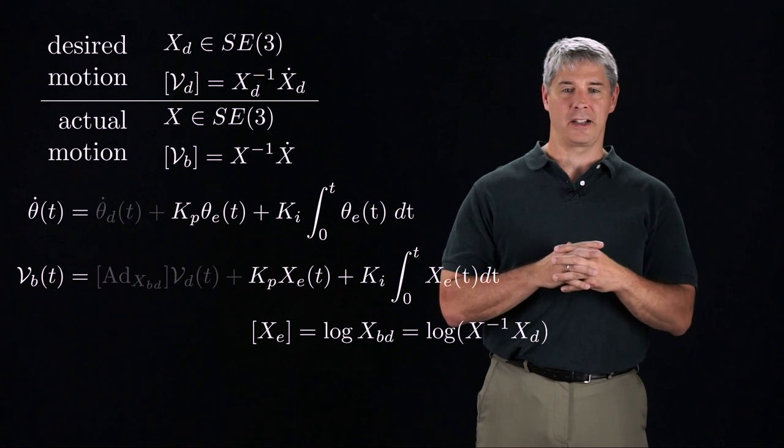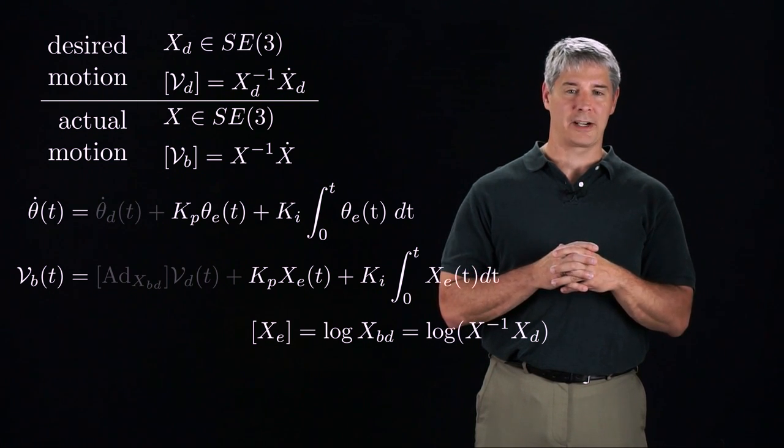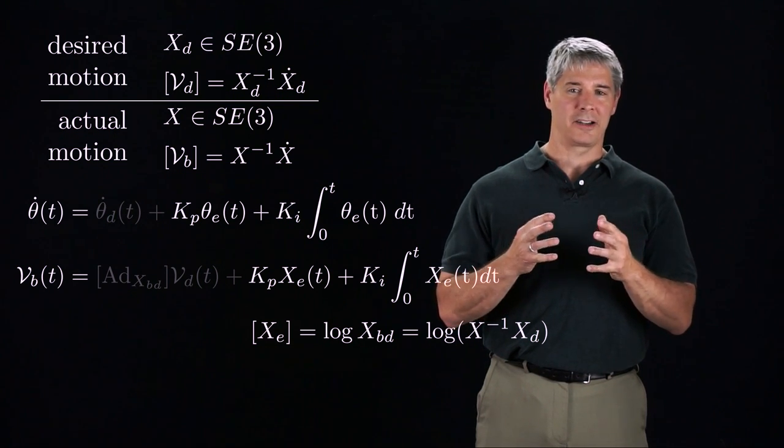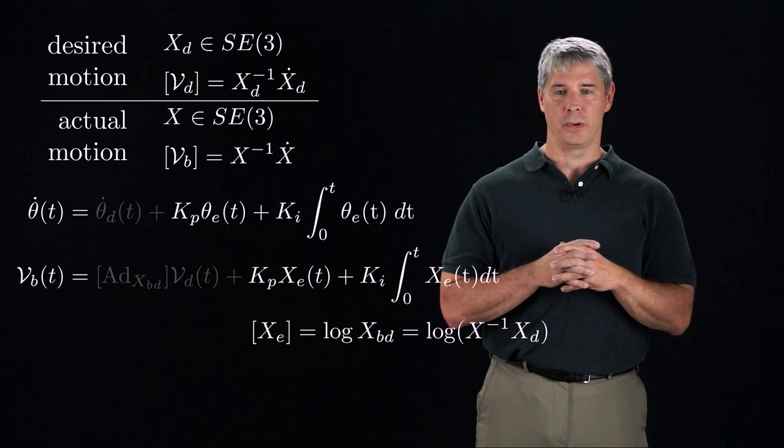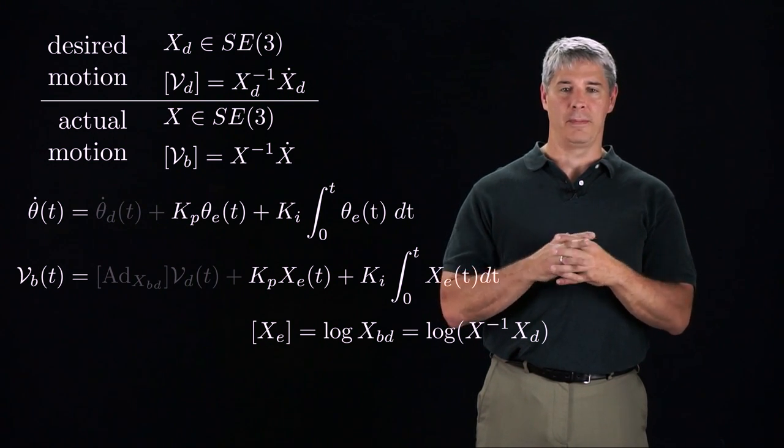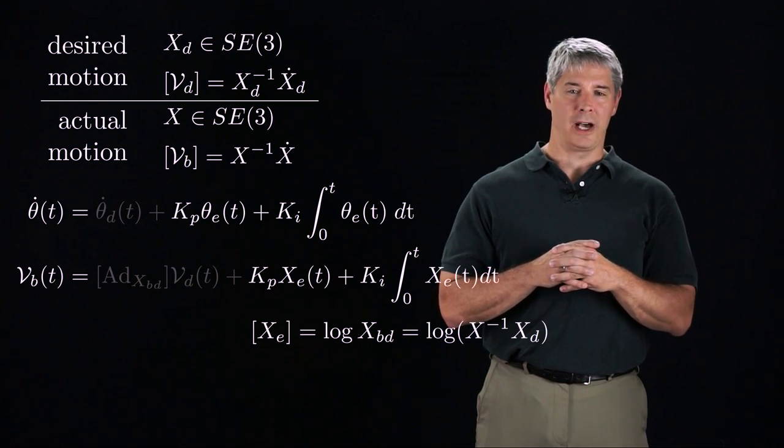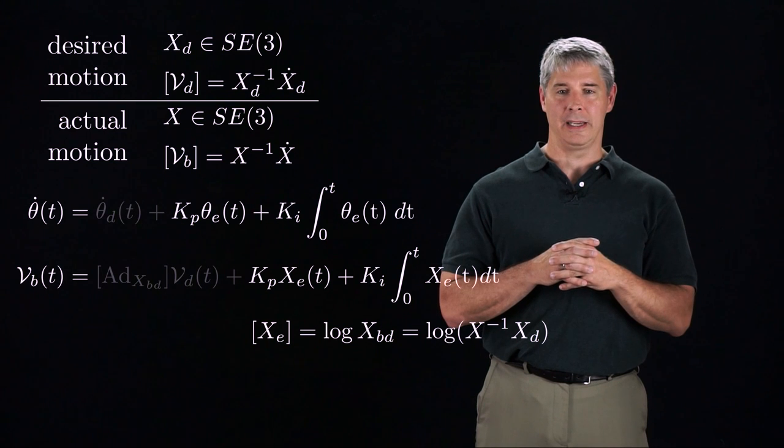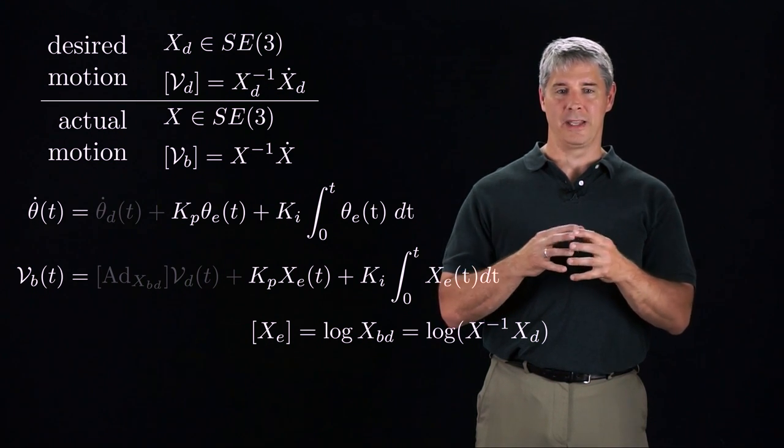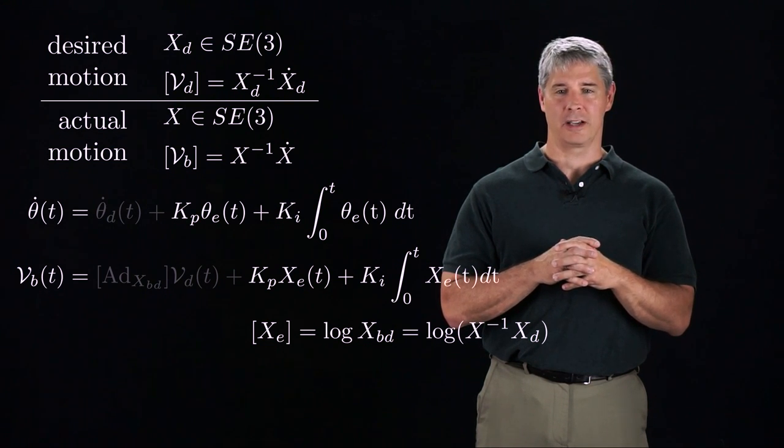Xbd, which we calculated earlier to be X inverse times XD, is the configuration of the desired frame relative to the actual frame, and the log calculates the matrix representation of the twist, expressed in the end effector frame, that goes from the actual frame to the desired frame in unit time. This twist is multiplied by the proportional gain Kp and integrated and multiplied by the integral gain Ki, to get the PI feedback portion of the commanded velocity.